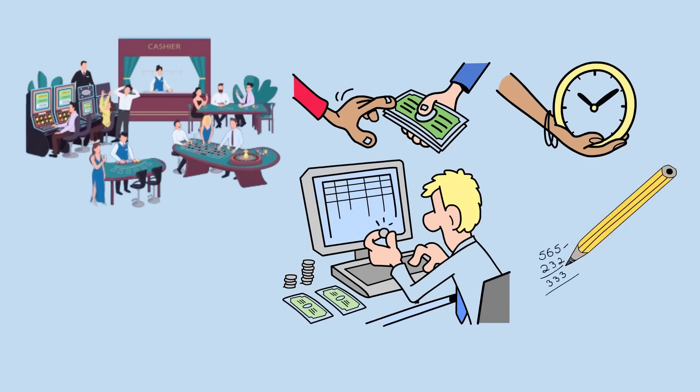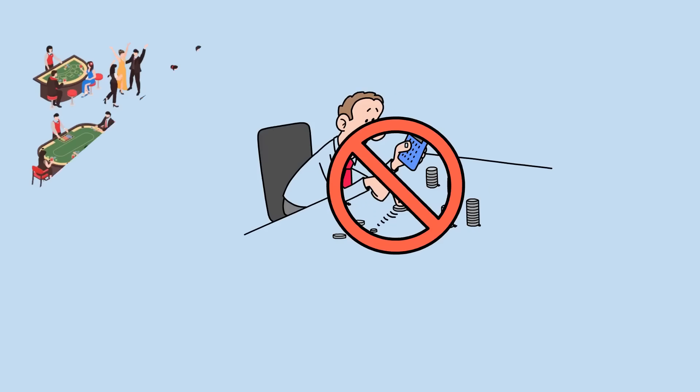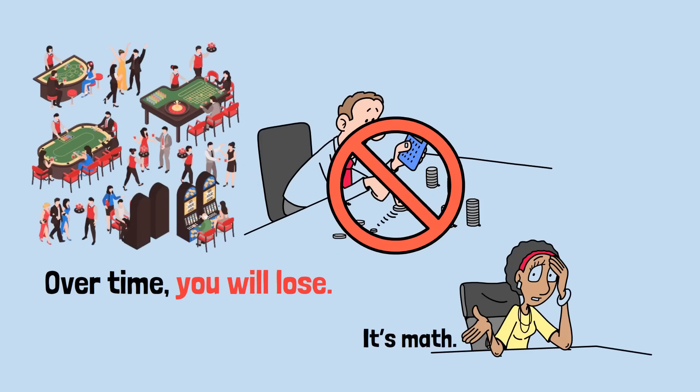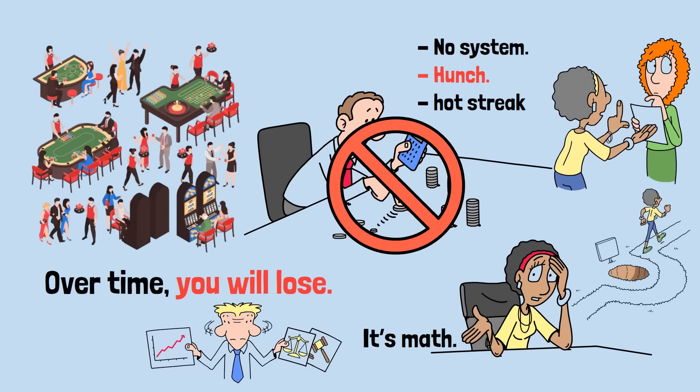Given the mathematical realities, what's the smartest strategy if you still feel tempted to gamble? Don't gamble at all. Every game is designed with a house edge that guarantees one thing: over time, you will lose. It's not bad luck. It's math. The odds are never in your favor. And no system, hunch, or hot streak can change that. If you're serious about making rational decisions, walking away is the only winning move.